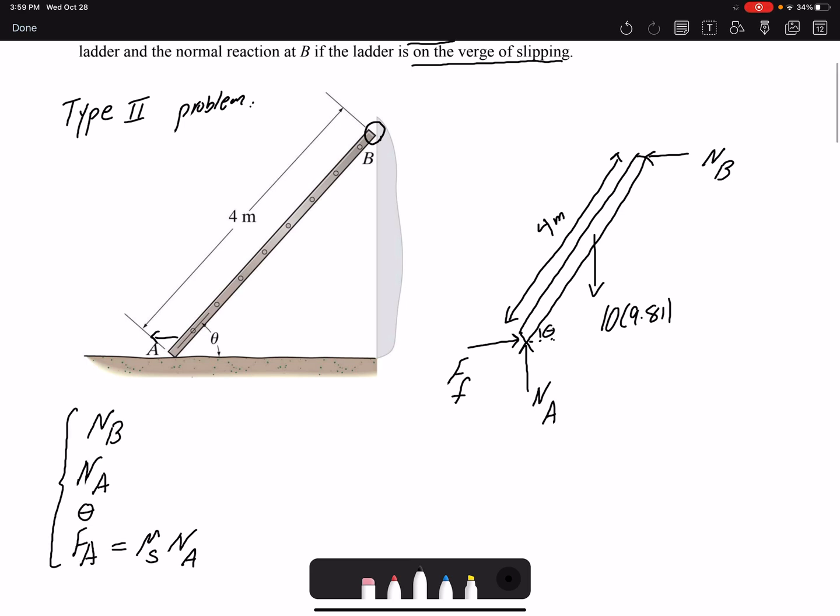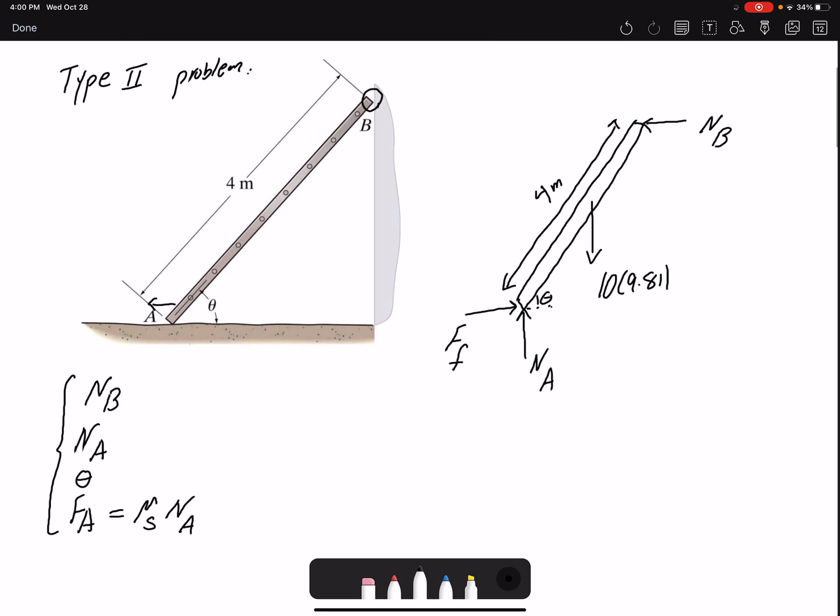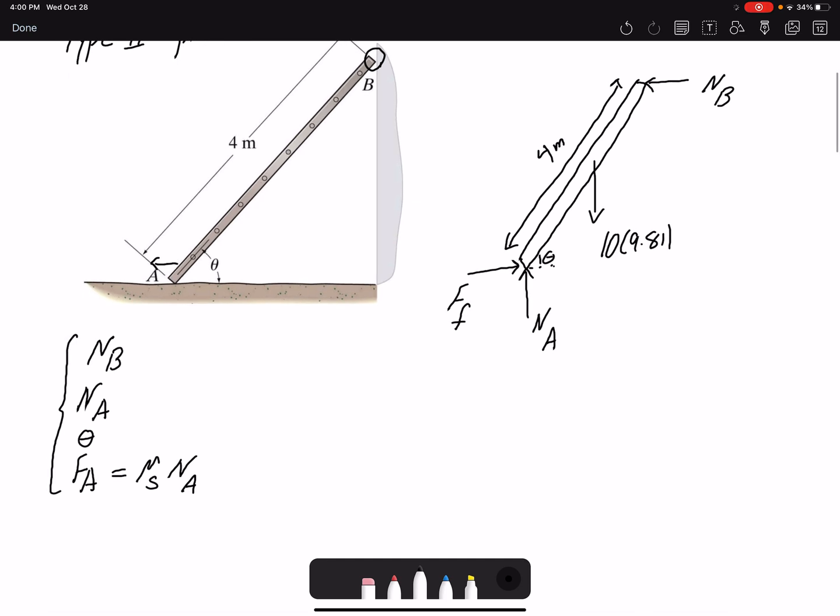Let's write our equilibrium equations. I'm going to start with summation of forces in y equals zero. I have Na and the weight, so that would be 98.1 Newtons. Those are the only two forces I have.